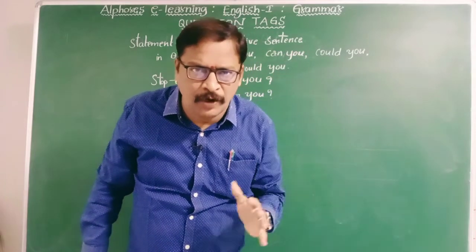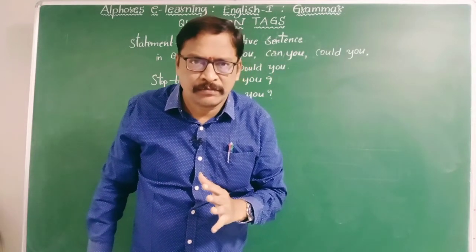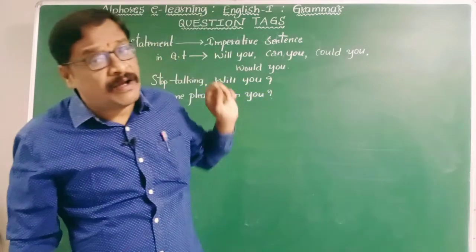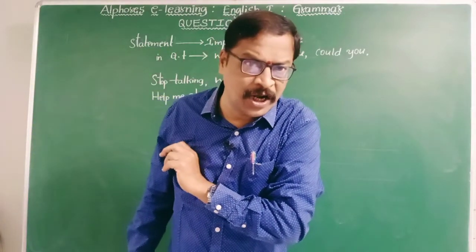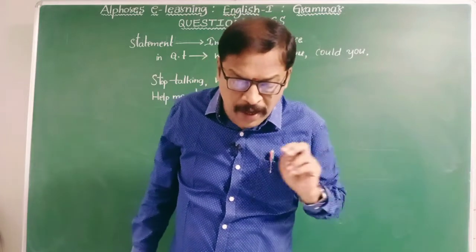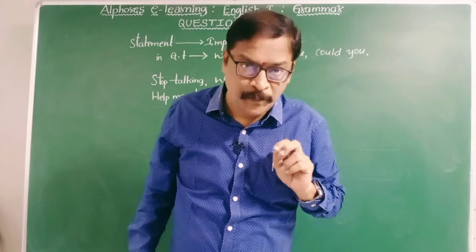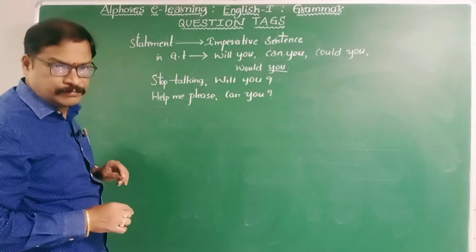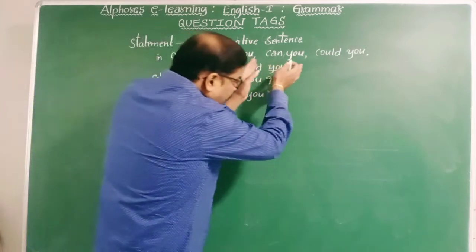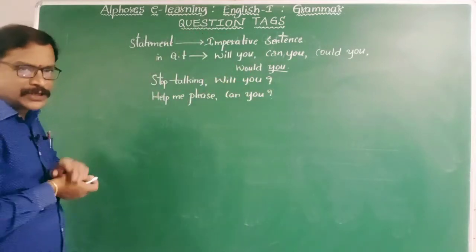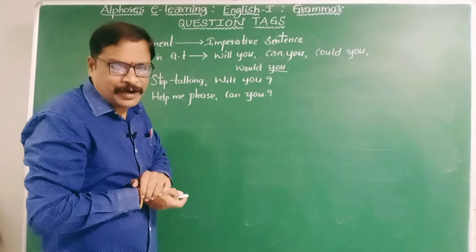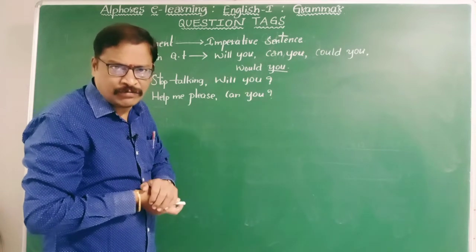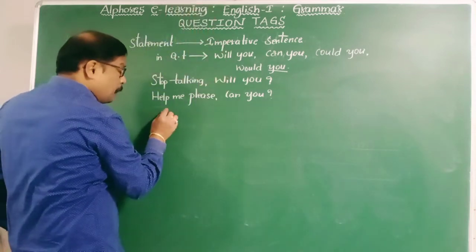Stop talking, will you? Come here, will you? Don't consider the verb as simple present tense — if you say 'don't you' that will be wrong. The subject is always you. Stand up, will you? Sit down, will you? Get out, will you? Stay there, will you? Do the work, will you?